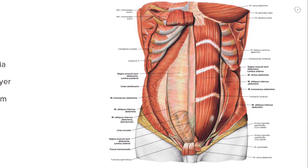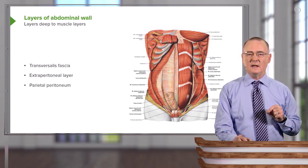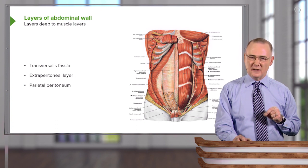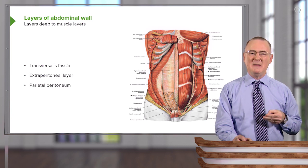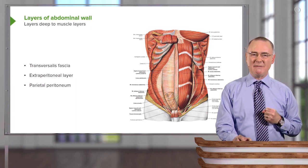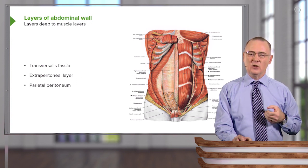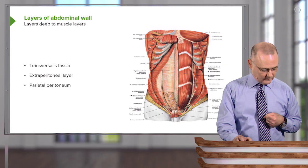This is the fascia that runs on the deep surface of the transversus abdominis. Just deep to the transversalis fascia, we'll have a thin layer called the extraperitoneal layer, and there are variable amounts of fat that can be detected here. Immediately deep to the extraperitoneal layer, you'll have the parietal peritoneum, which is lining the abdominal cavity. Once you go through the parietal peritoneum, you are then within the peritoneal cavity, where you can see the suspended abdominal viscera.